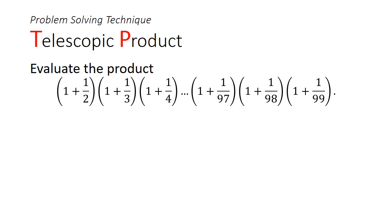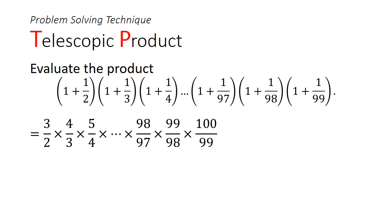The trick to this question is to first simplify this product. What we're going to do is take the terms inside each of the brackets and express them as a single fraction. This will give us 3 over 2 times 4 over 3 times 5 over 4 all the way to 100 over 99. What you're going to notice is that the numerator in each of the terms is going to cancel with the denominator in the subsequent term.